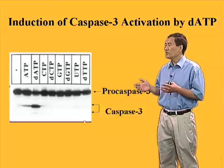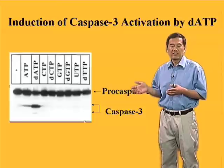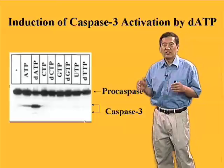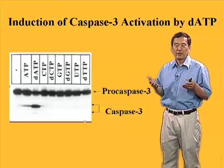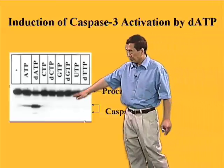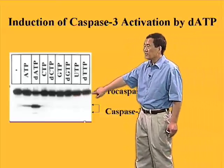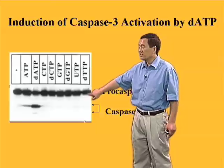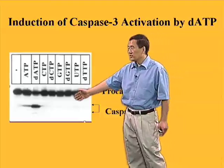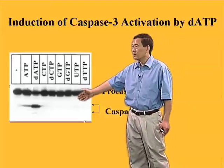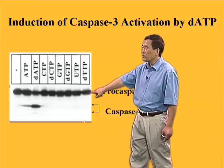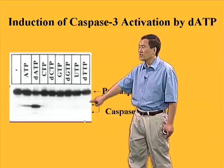One interesting aspect is that we make this S100 from living cells — cells that are not activated. So if we incubate an in vitro translated S35-labeled procaspase-3 with the S100 from HeLa cells, we see that the procaspase-3 is not going to be cleaved and activated.